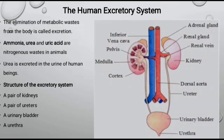Organisms that excrete ammonia are called ammonotelic. For example, many bony fishes, aquatic amphibians and aquatic insects are ammonotelic organisms. Whereas reptiles, birds, insects and land snails excrete uric acid and are called uricotelic animals.